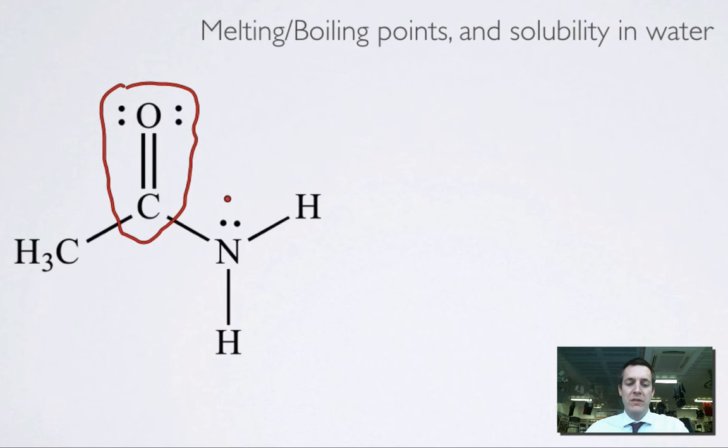But not only do we have that, we've also got this NH2 group, and the nitrogen here has a lone pair, just like this oxygen does, but it also has hydrogens, which are directly attached to a highly electronegative atom. So we can have hydrogen bonding to this group and also from this group.